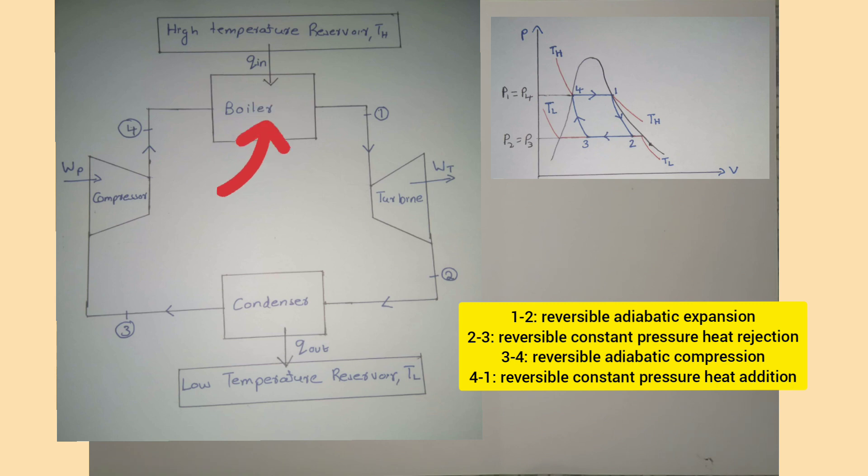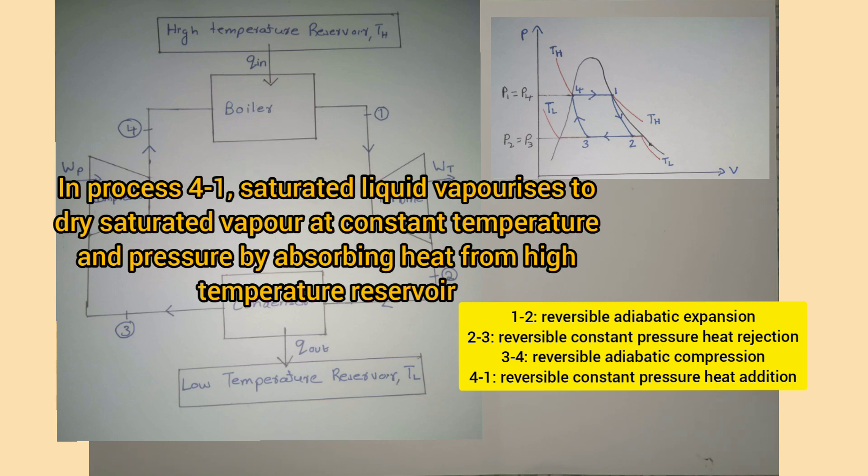In process 4 to 1, saturated liquid vaporizes to saturated vapor at state 1 by absorbing heat Q in from the high temperature reservoir at temperature TH. The process takes place at constant temperature and pressure as shown in the PV diagram, and thus the cycle is completed.